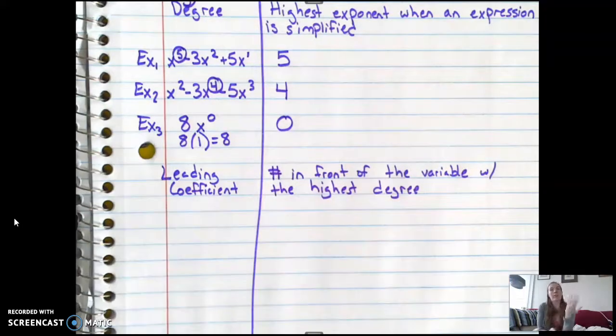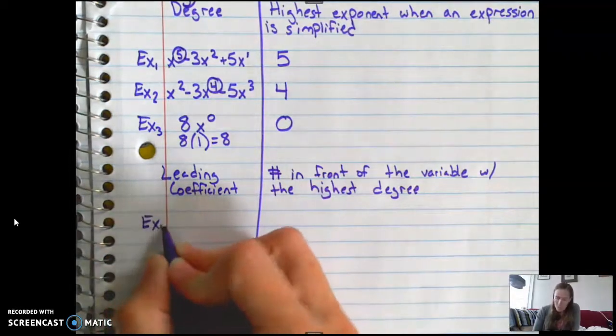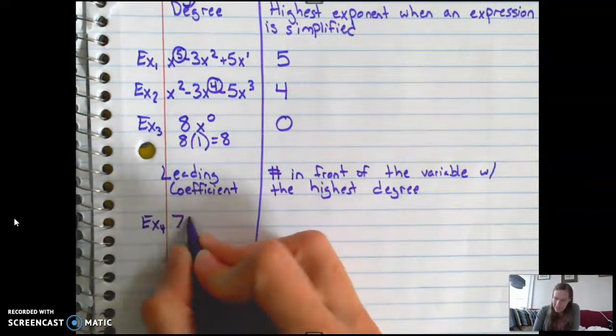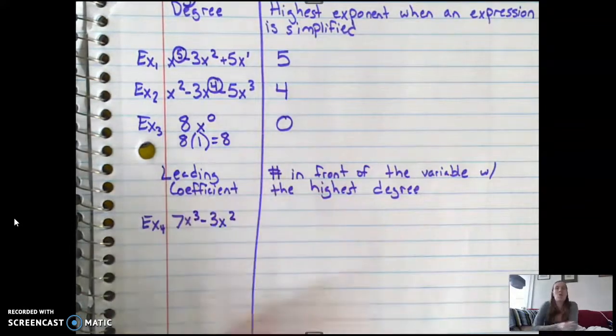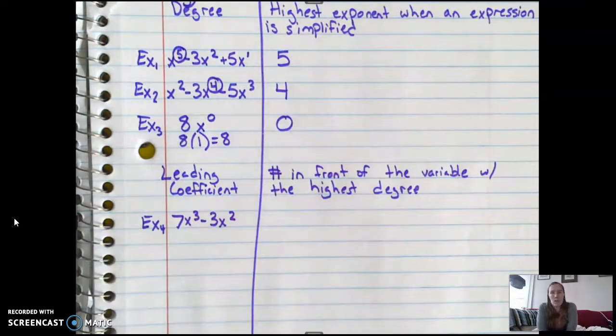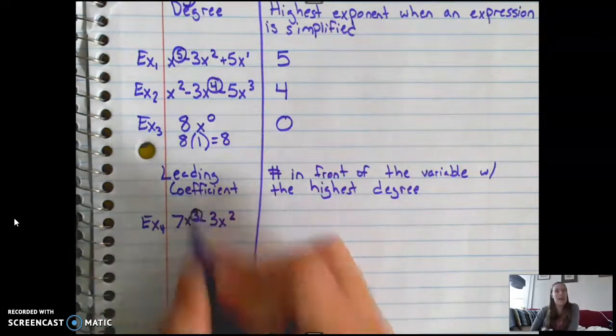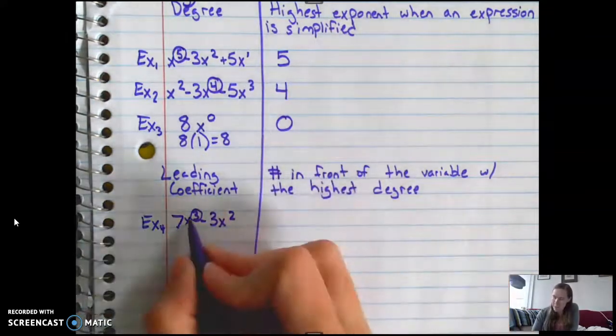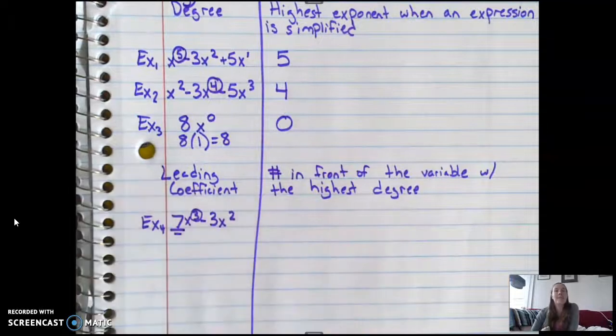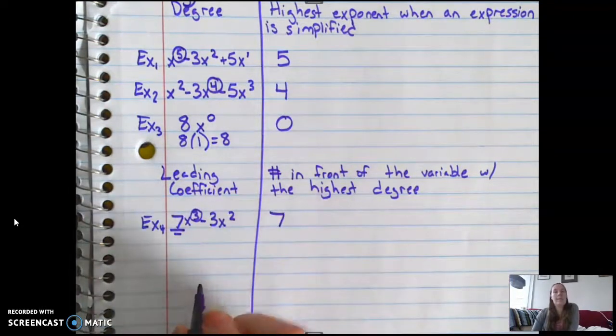So we just practiced finding the degree. So now we're going to do something a step further. So say for example, we had 7x cubed minus 3x squared. Well, what's the degree of this polynomial? It's degree 3, because it's the biggest. That means it's the number in front of the variable. Well, the number in front of our x is 7. So that means our leading coefficient is 7.